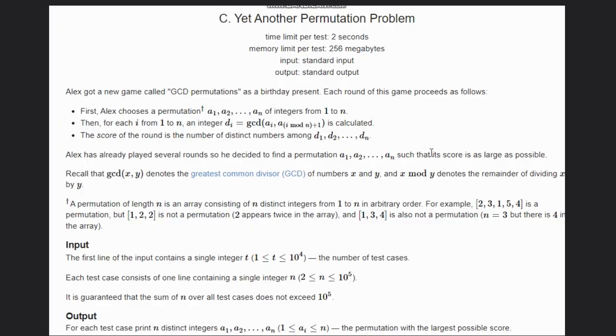Hello, welcome back to our YouTube channel. Today we are going to see the problem C from Codeforces, another permutation problem. Alex got a new game called GCD permutations as a birthday present, and each round of this game proceeds as follows. First, Alex chooses a permutation, and then for each i equal to 1 to n, an integer di equal to GCD of consecutive elements will be calculated.